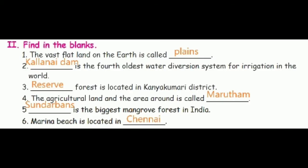First, Roman numeral - Fill in the blanks. First one: the vast flat land on the earth is called blank. Right answer is Plains. Second one: blank is the 4th oldest water diversion system for irrigation in the world. Right answer is Kallanai Dam.